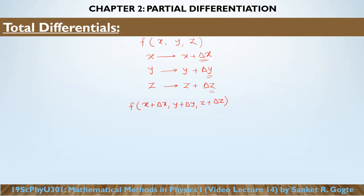Delta x, delta y, and delta z can also be equal to zero. When they are zero that means we are not changing that particular independent variable. Let's now find out this difference delta f that is observed in the function when we change the independent variables, which is going to be equal to the function at x plus delta x, y plus delta y, and z plus delta z minus the function at x, y, and z. So when we change the independent variables by a finite amount, we observe a finite change delta f in the function itself.